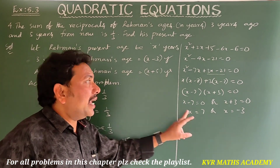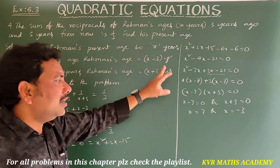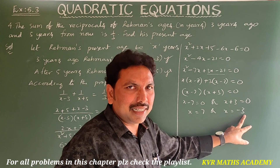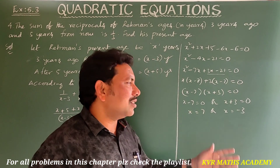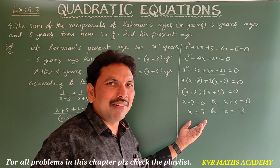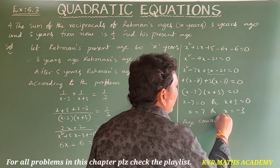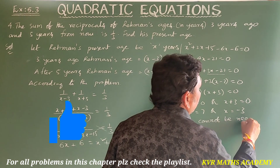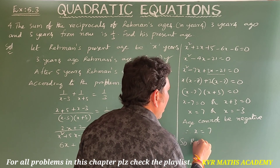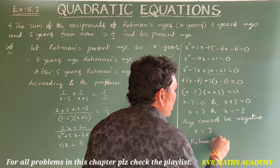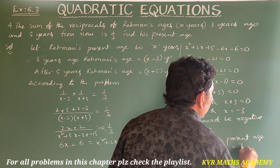Since x represents Rahman's present age, age cannot be negative. So we reject x equals minus 3. Therefore Rahman's present age is equal to 7 years.